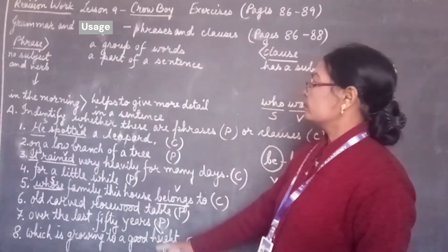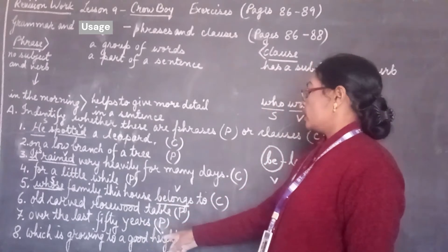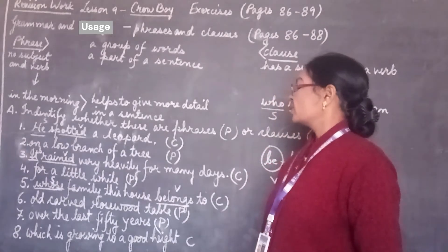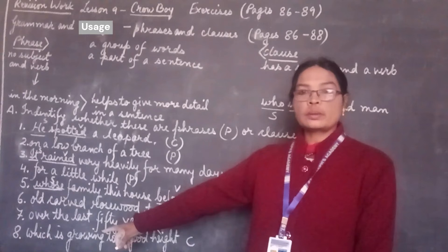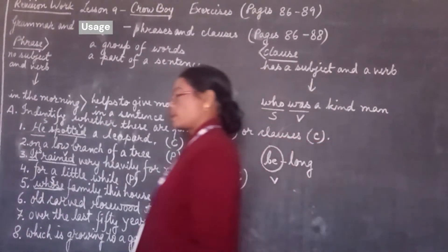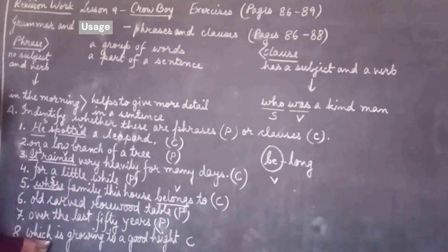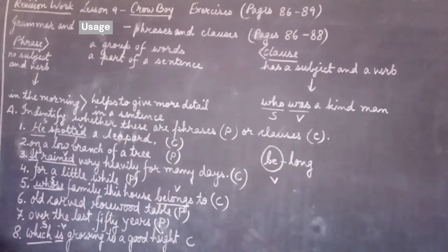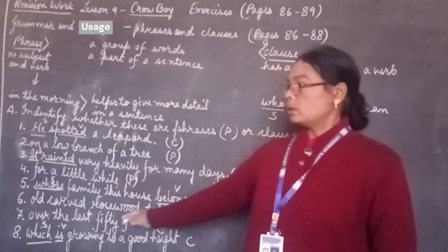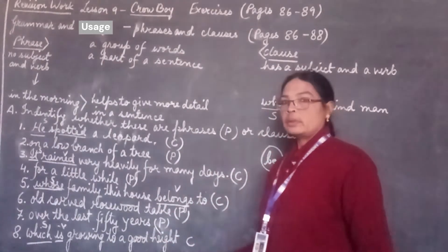Number 8 we have: 'which is growing to a good height'. The word 'which' is our subject and 'is' is our verb, so number 8 is our clause.